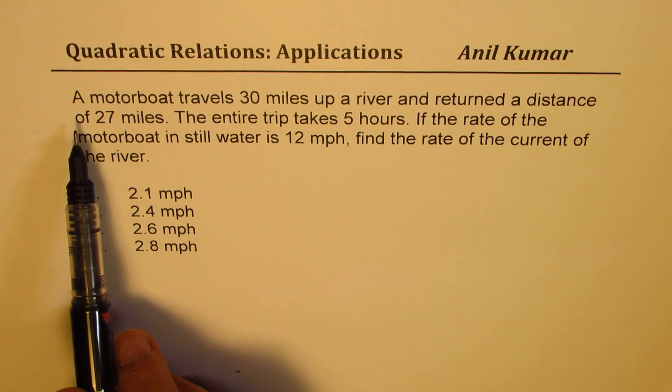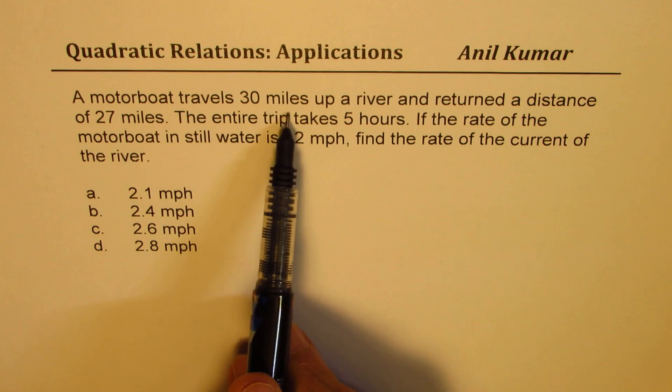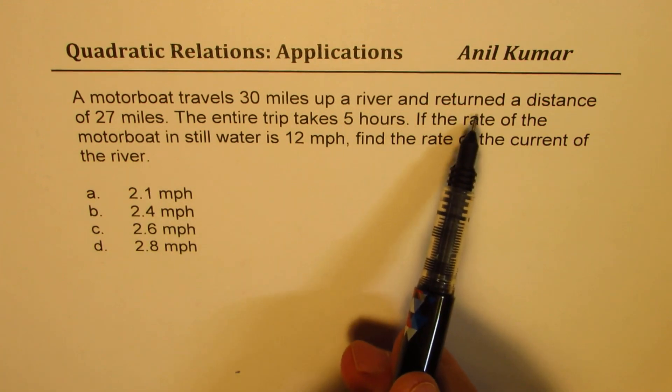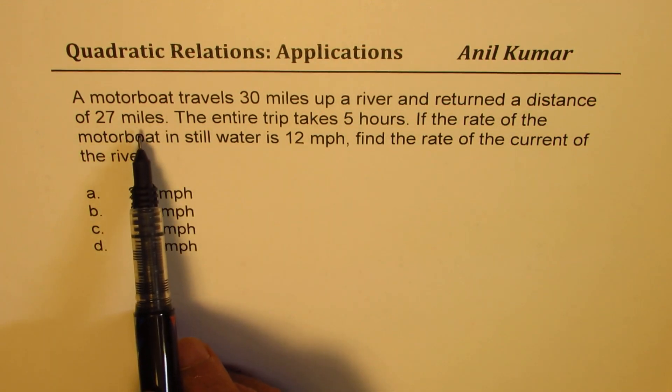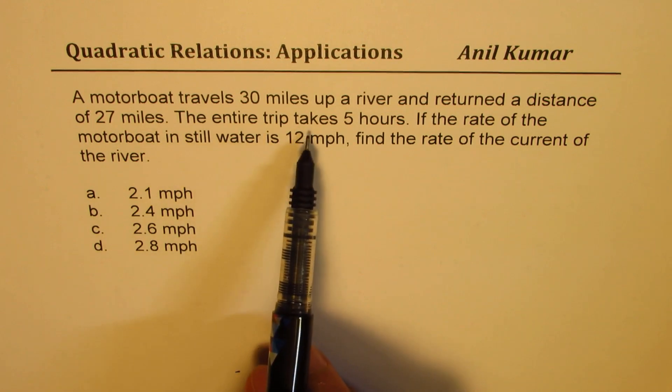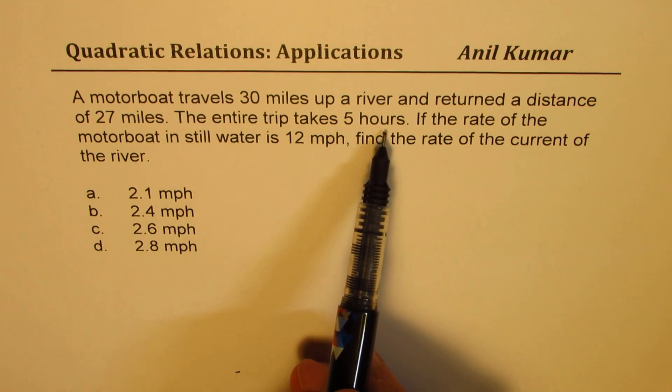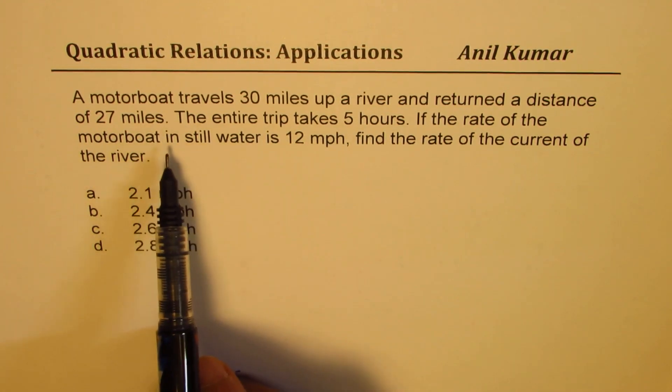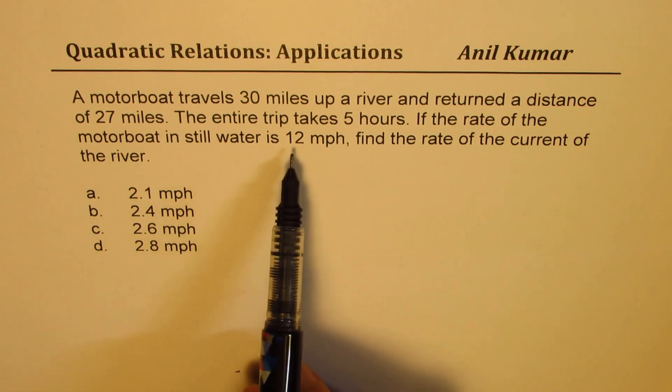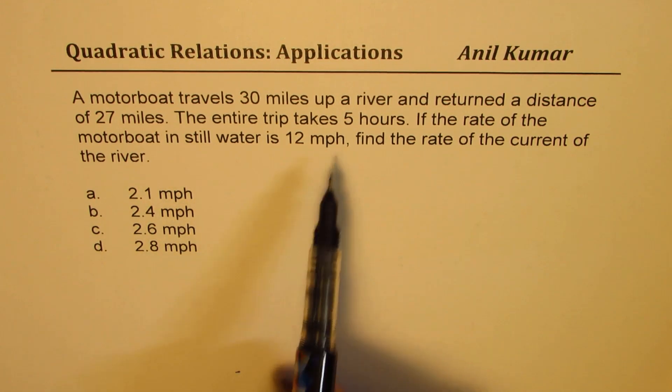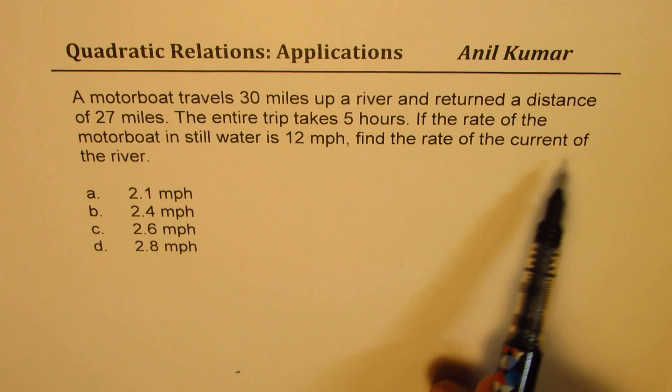The question here is, a motorboat travels 30 miles up a river and returned a distance of 27 miles. The entire trip takes 5 hours. If the rate of the motorboat in still water is 12 miles per hour, find the rate of current of the river.